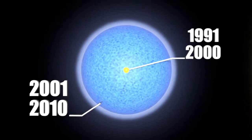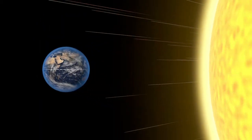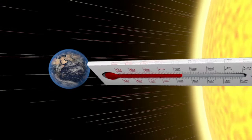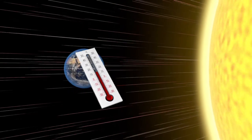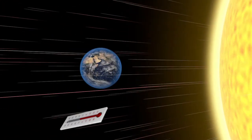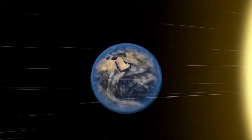The decade was the warmest for both hemispheres. Land and ocean surface temperatures were an estimated 14.47 degrees Celsius, 0.21 degrees higher than the 1991 to 2000 global average.